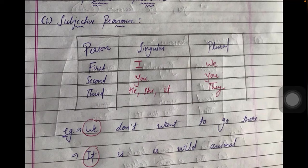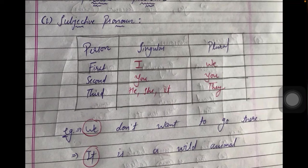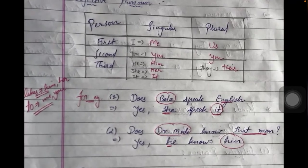Another example: 'Tiger is a wild animal.' Which pronoun replaces 'tiger'? We replace it with 'it,' because 'it' is used for animals, birds, and things. Here tiger is the subject, so in the subjective pronoun position we replace 'tiger' with 'it': 'It is a wild animal.'